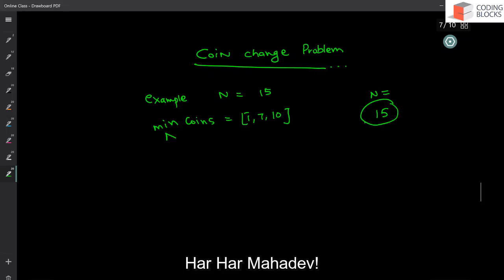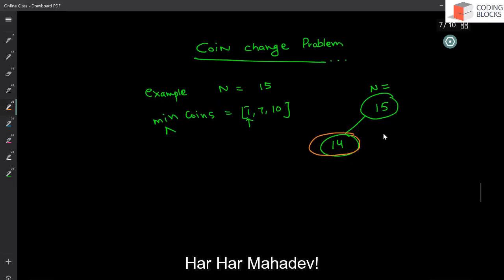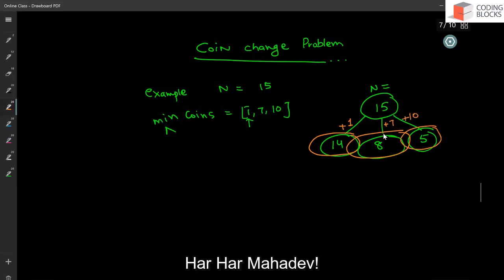From n, we make a call on n minus coins[i]. The subproblem computes how many coins are needed to make a denomination of 14, and then we can pick one 1-rupee coin to make it 15. Or the subproblem looks at how to make 8, and we pick one 7-rupee coin to make 15. Or the subproblem sees how to make 5 rupees and we pick a 10-rupee coin to make 15.